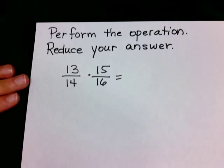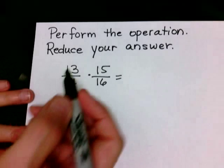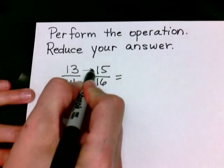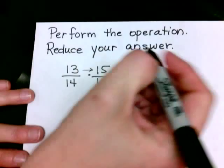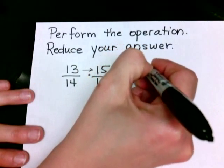This problem wants us to multiply fractions and then reduce our answer. So when we multiply fractions, we multiply across the top. So we would actually do 13 times 15.